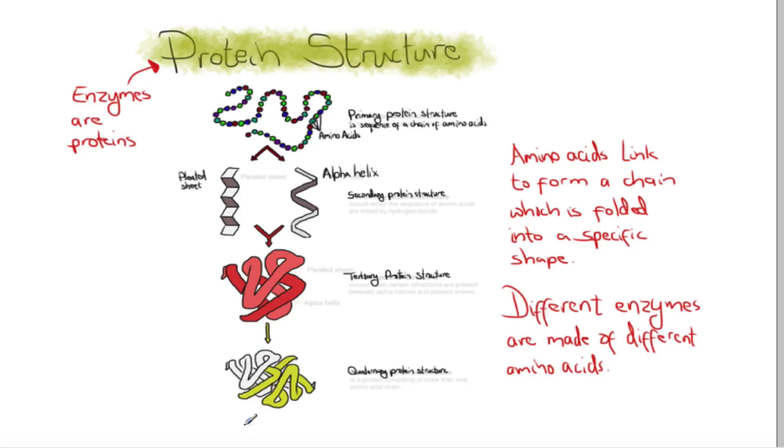If you start to look at evolution, we're looking at mutations and this is how mutations come about. So one little change in an amino acid gets you a new protein and it could be that that protein brings about maybe an advantage. This is all you need to know - it's folded into a very specific shape and different enzymes are made of different amino acids.